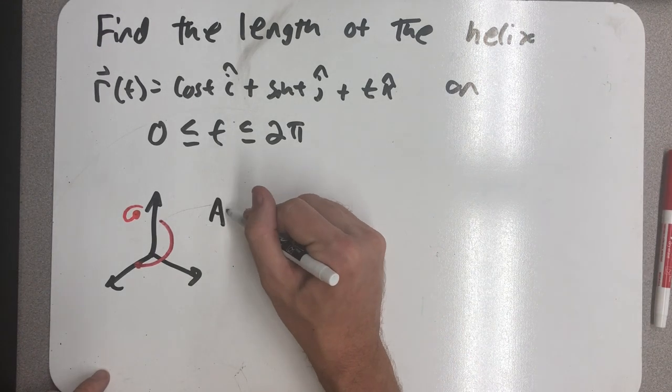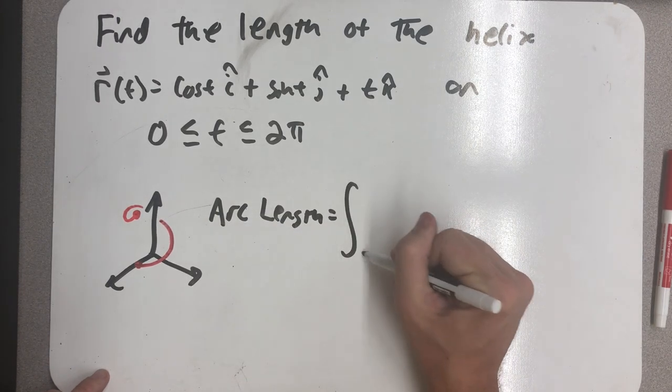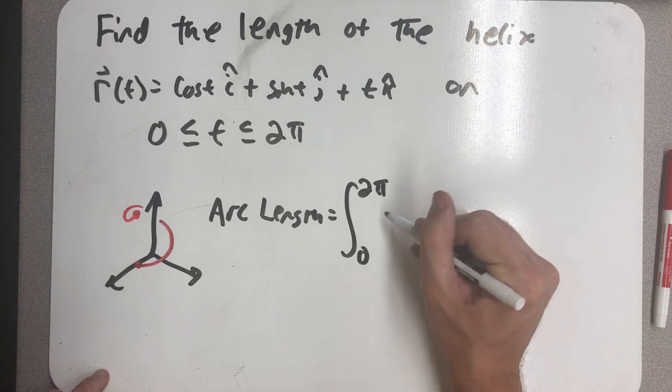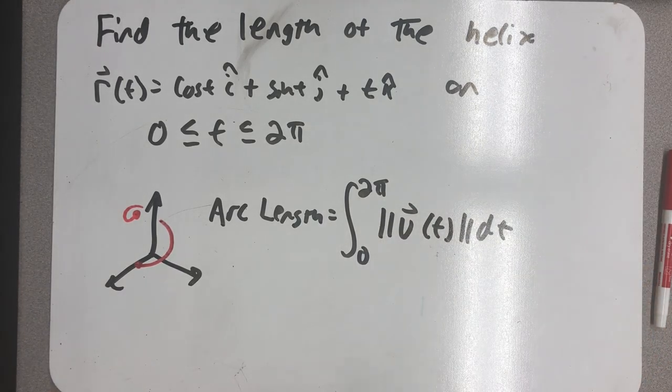We know that that arc length should be a definite integral from 0 to 2 pi of the speed dt. So I need to find the speed.